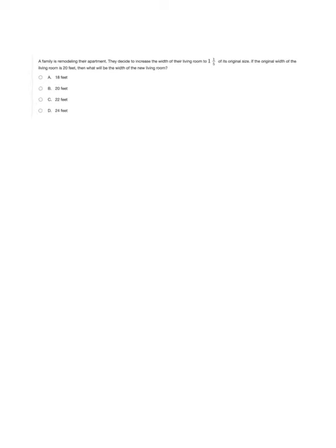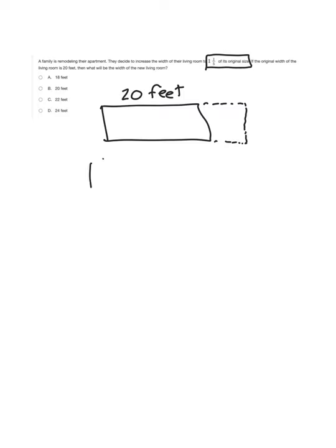Let's look at the next question. A family is remodeling their apartment. They decide to increase the width of their living room to one and one-fifth of its original size. Again, that magic word 'of' makes you think that you need to multiply these fractions or mixed numbers. If the original width of the living room is 20 feet, then what will the new width be? The original living room was 20 feet wide and they're going to expand it to one and one-fifth of its original size.